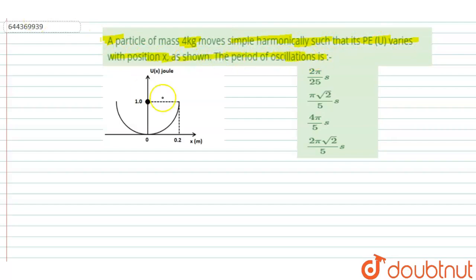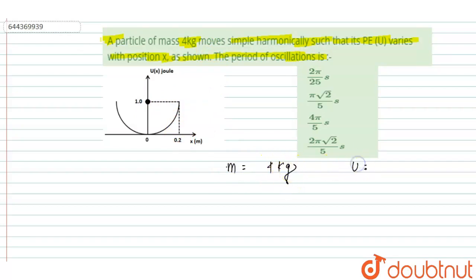The value of the mass of the particle M is equal to 4 kg. And the value of U is equal to 1 joule when the value of X is equal to 0.2 meters.